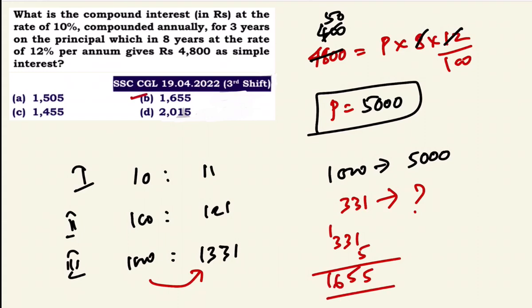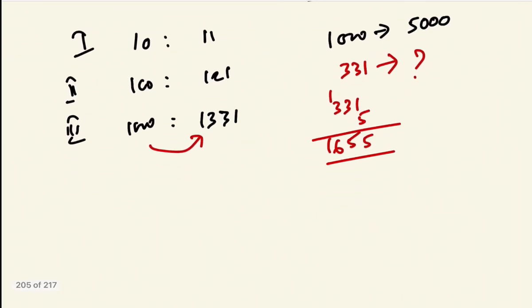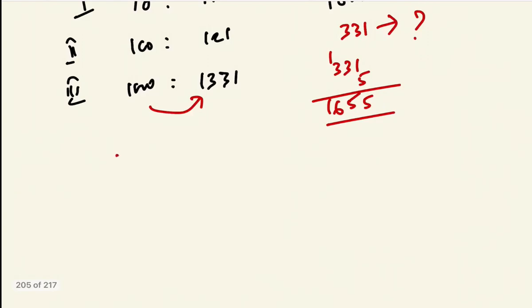Option B is the answer. Using the direct method: 10% of 5000 for 3 years. First year interest is Rs.500.